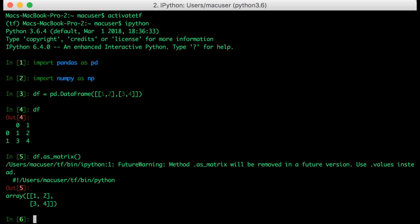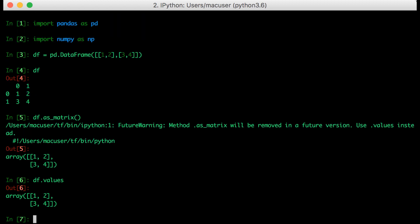Now let's try using as_matrix to obtain a NumPy array. As you can see, it says as_matrix is deprecated and will be removed in a future version, and we should use dot values instead. So let's try that. Awesome, it works as expected.